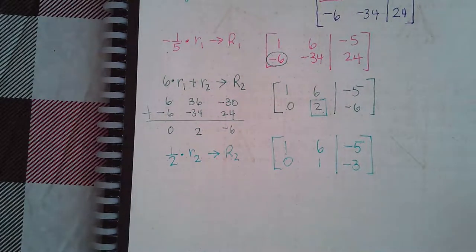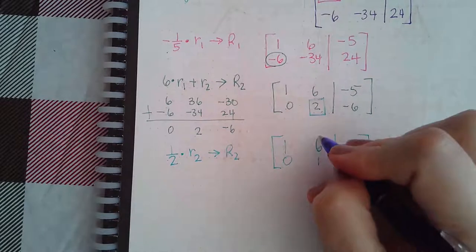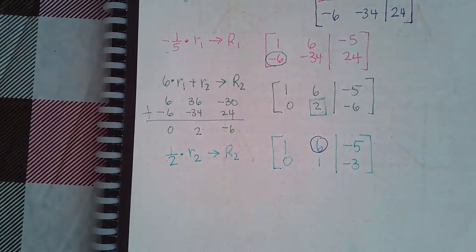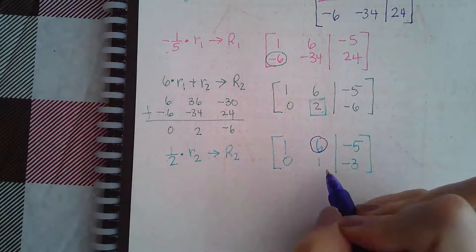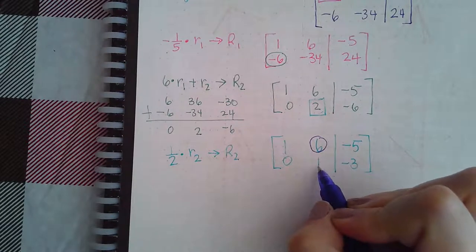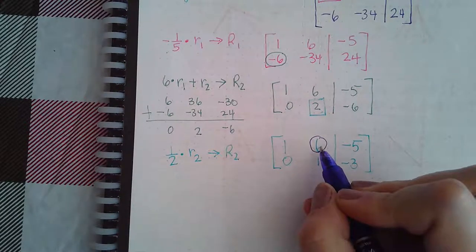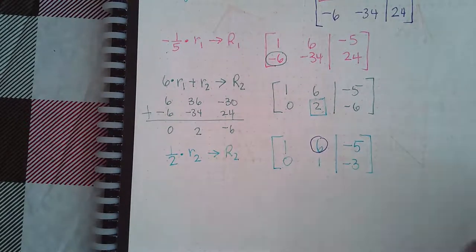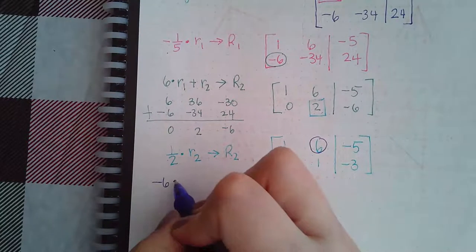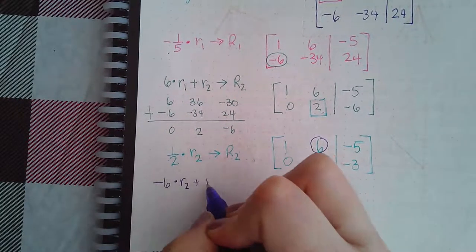Next, we need to focus on changing this guy to a 0. So, I need to turn this one into a negative 6, so when I combine it with a positive 6, it will become 0. So, I'm going to do negative 6 times row 2 plus row 1. Give me my new row 1.